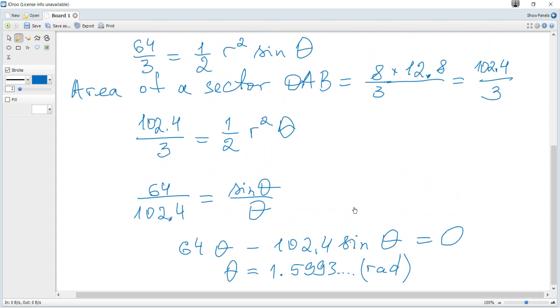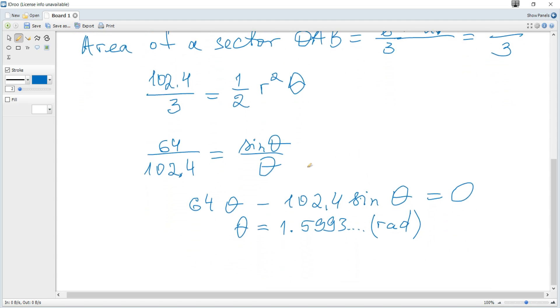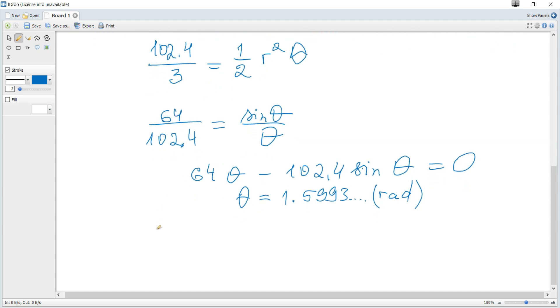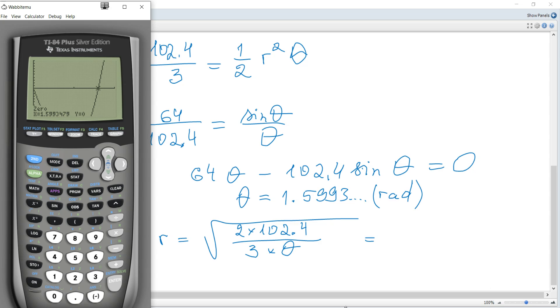And then let's substitute into this. So r is square root of what? 2 times 102.4 divided by 3 and divided by theta. So it becomes 204.8 divided by 3 and divided by the answer, square root.